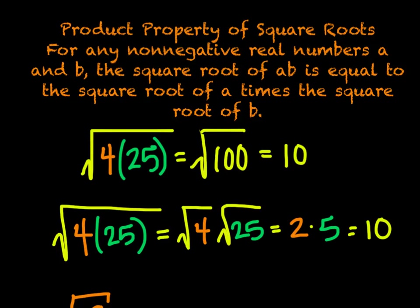That is mumbo-jumbo, but we can look at it like this. If we had the square root of 4 times 25, we can do the math — 4 times 25 equals 100, and the square root of 100 is 10. Or we can look at it as the square root of 4 times the square root of 25. Square root of 4 is 2, and the square root of 25 is 5, so our answer, yet again, is 10.